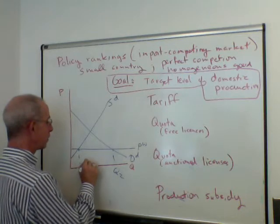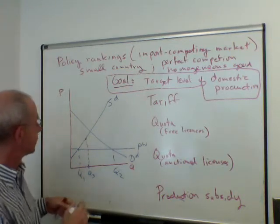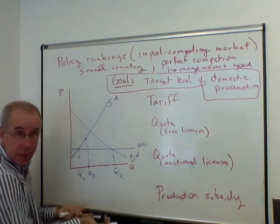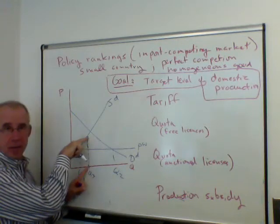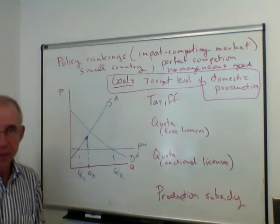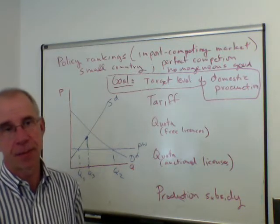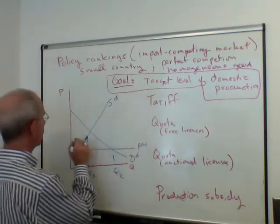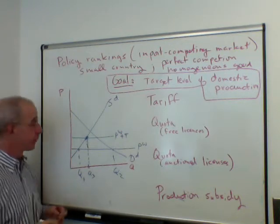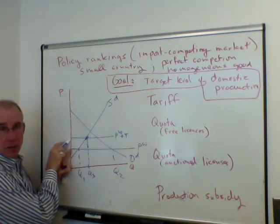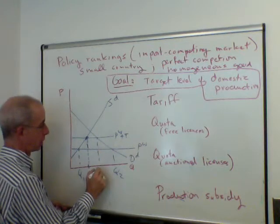In essence, what we're trying to do is create some incentive for domestic firms to produce not Q1 but Q3. Domestic firms won't do this originally because the cost given by the height of the supply curve exceeds the price they would receive under free international competition, so they're unwilling to produce that amount. One way is to impose a tariff, with the difference between the two prices being the tariff, which increases domestic production from Q1 to Q3.